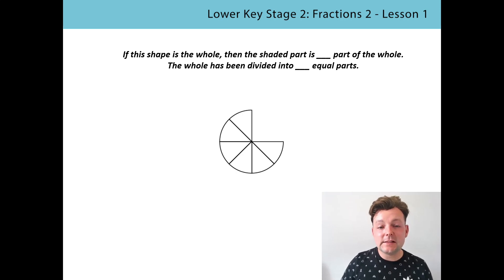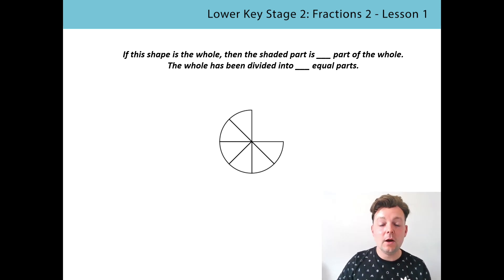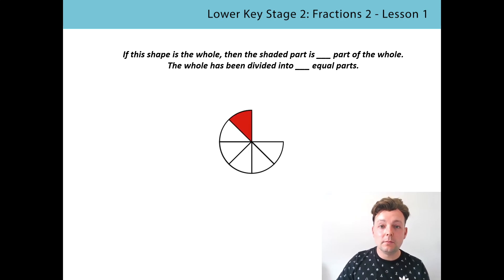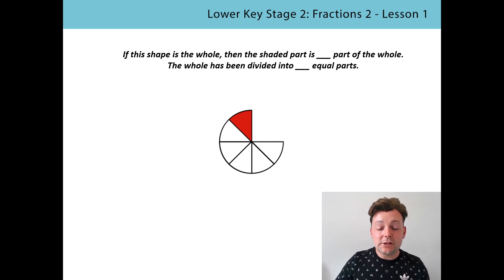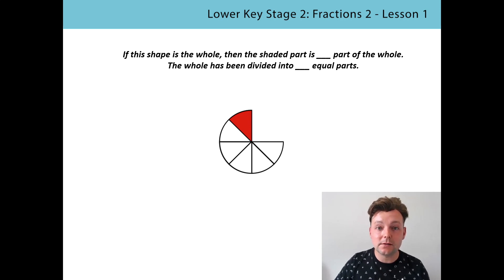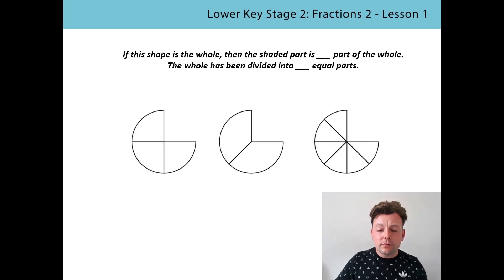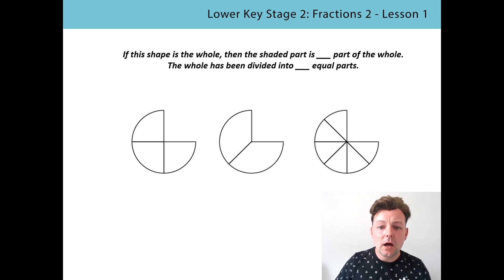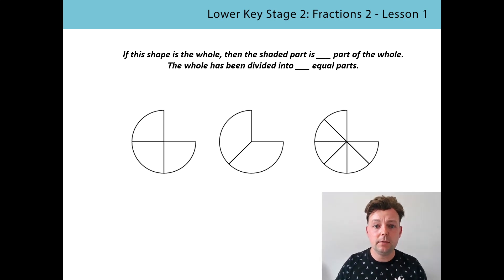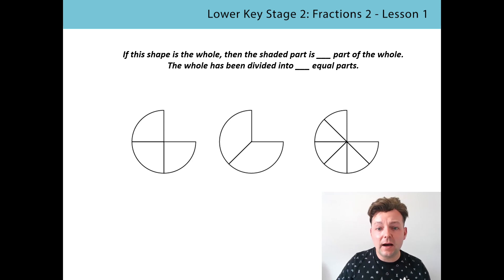You're getting the hang of this now. This time, let's try it a little differently. I would like you to try and read the stem sentence out first yourself. Pause the video, then replay and we'll say it together. If this shape is the whole, then the shaded part is one part of the whole. The whole has been divided into six equal parts. Very well done indeed. So there are our three different wholes, and although the whole is the same for each shape, the number of equal parts is being divided differently.